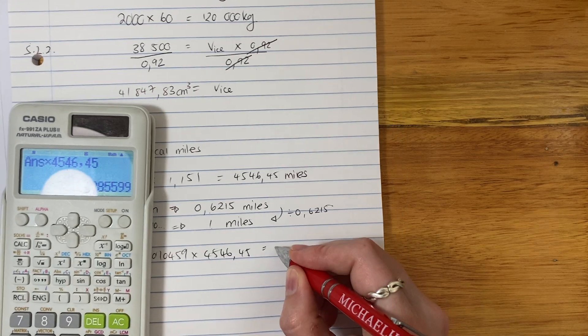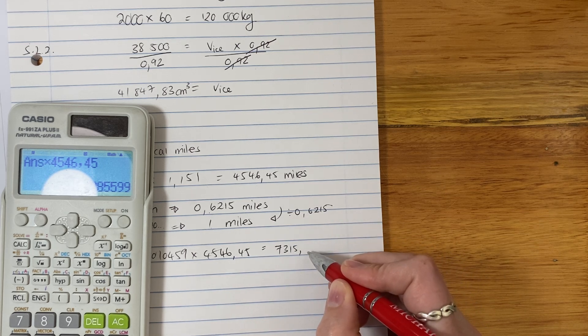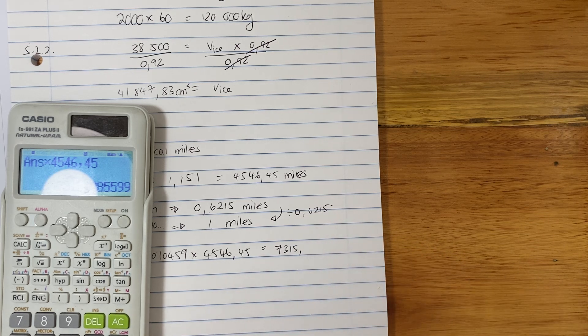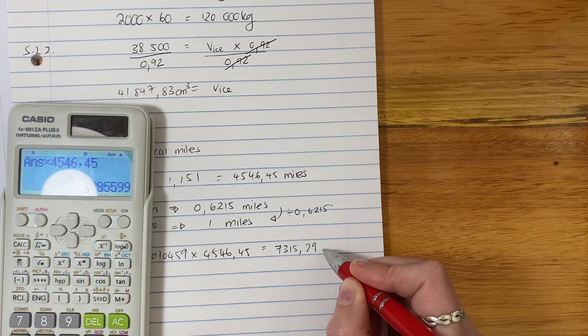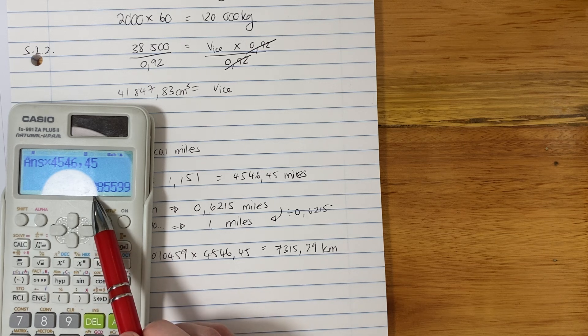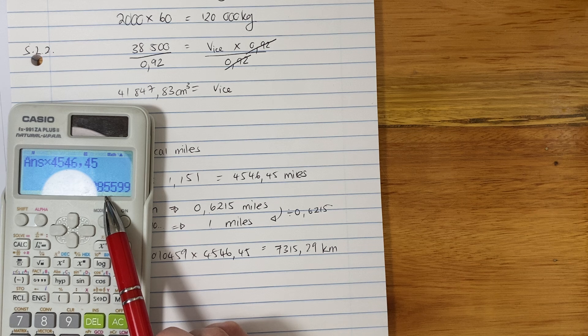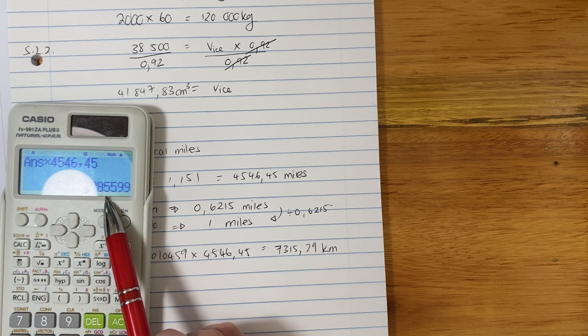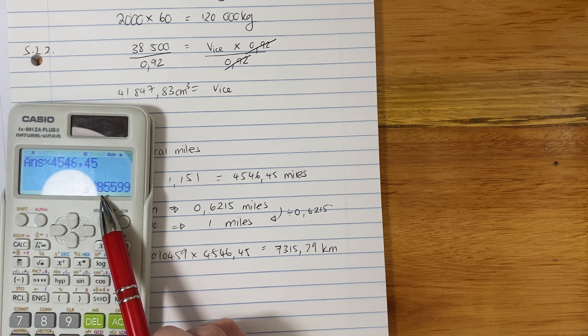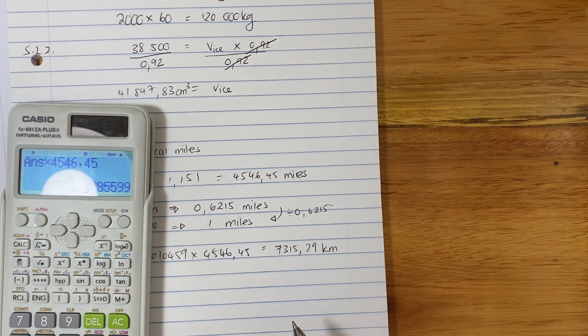And we have just got ourselves an answer in kilometers, right? So it's all about working methodically. And I'm going to round this off to two decimal places. Remember, when I'm rounding off to two decimal places, I look at the third decimal. And the third decimal here is 5. So because it's 5, we're going to round up. And that's why it is 7,319.29 kilometers.